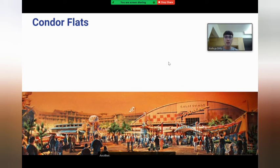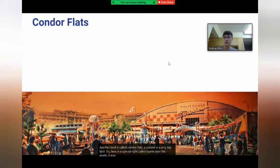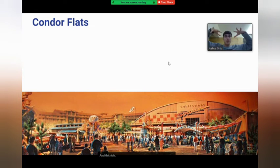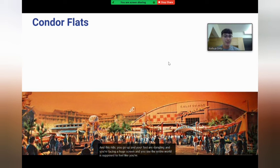Another land is called Condor Flats — a condor is a very big bird. Here is a special ride called Soarin' Over the World, which was originally called Soarin' Over California. In this ride, you go up and your feet are dangling while you're facing a huge screen and you see the entire world. It's supposed to feel like you're flying like a bird.